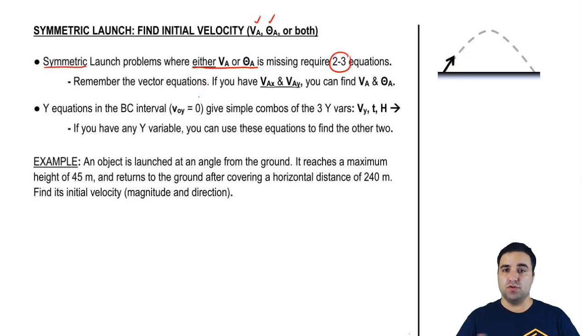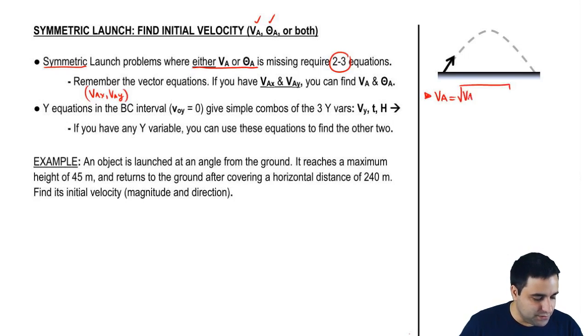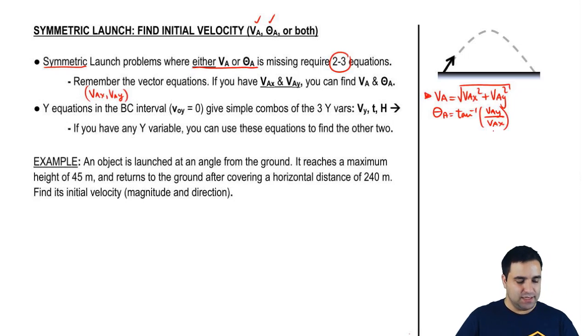Remember our vector equations. Two of them have to do with decomposition, how to get VAX and VAY, but two of them have to do with how to put a vector back together. The magnitude of any vector is the Pythagorean of its components, and the angle of any vector is the arc tangent of its components. So the idea is, if I'm looking for VA and theta A, I'm actually going to find VAX and VAY and then use the components to find the vector and the angle. So that's going to be our strategy, find VAX and VAY.